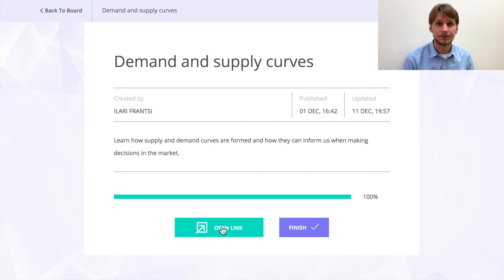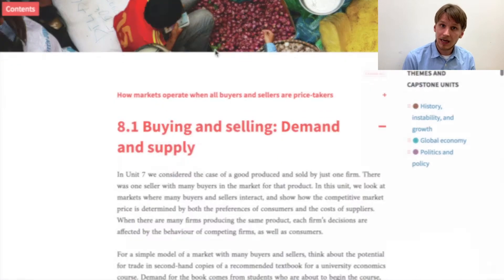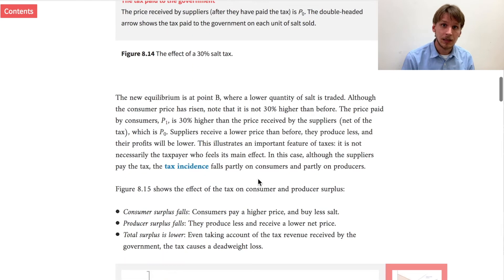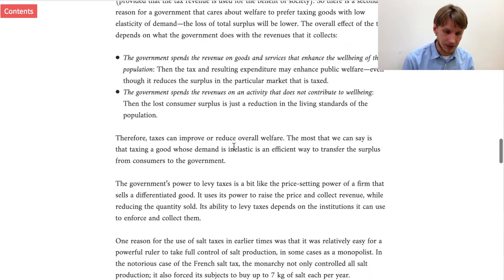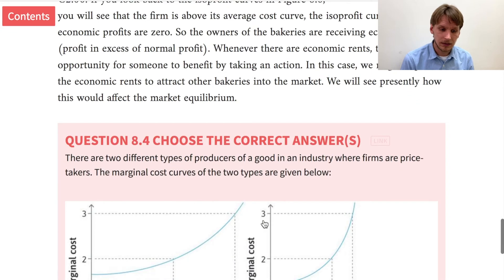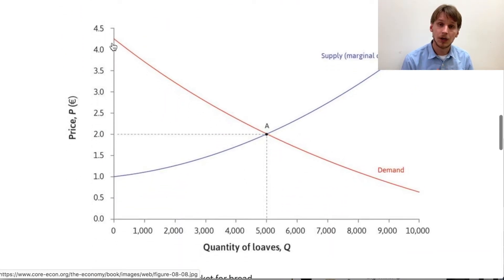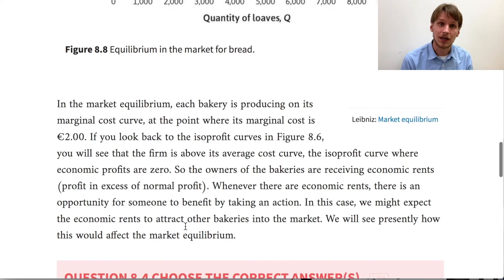Now you can read an article about supply and demand to get more in depth on this concept. After this, you can watch a video that broadens your picture about the supply and demand curves and their challenges in illustrating what really happens in reality, because this is a simplification and cannot explain everything. As you read these articles, you'll understand what factors affect these curves and what they can tell us about the supply and demand of a product. Supply and demand can meet at a certain equilibrium point where the price and quantity are right for the market.